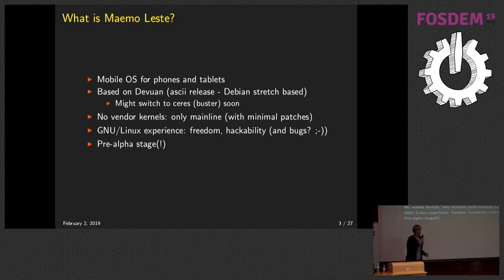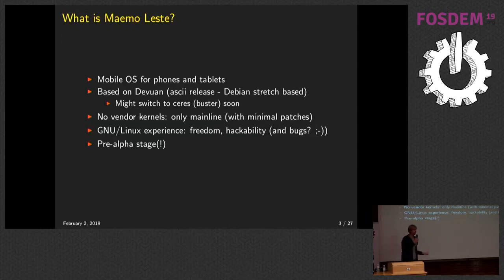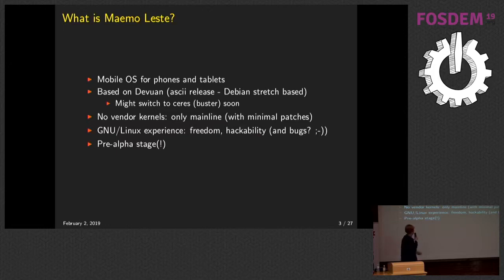We have a strict mainline-only policy. A lot of Android devices come with old kernels provided by the vendor that are never really updated, so you're stuck with security bugs — that's pretty bad. We just want the latest Linux version, which is called mainline. It's the entire GNU Linux experience; it's based on Debian, so you have everything in the Debian package repository available on your phone or tablet.